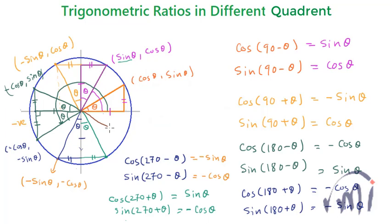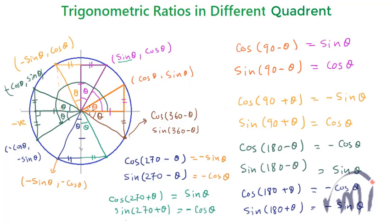For 360 minus theta: this represents the angle 360 — a full circle — minus theta, meaning this angle is theta. Completing the right angle triangle, the coordinates of this point represent cos(360 minus theta) and sin(360 minus theta). This new triangle is congruent to all the triangles made earlier. The x coordinate of this point equals cos theta, and the y coordinate equals minus sin theta. So cos(360 minus theta) equals cos theta, and sin(360 minus theta) equals minus sin theta.